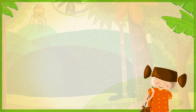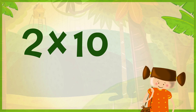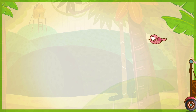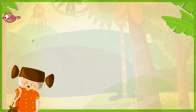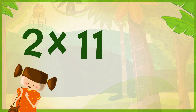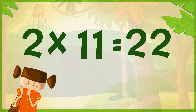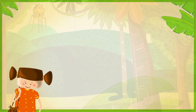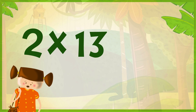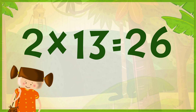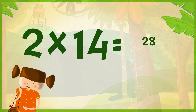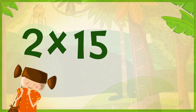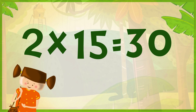2 x 9 is 18, 2 x 10 is 20, 2 x 11 is 22, 2 x 12 is 24, 2 x 13 is 26, 2 x 14 is 28, 2 x 15 is 30.